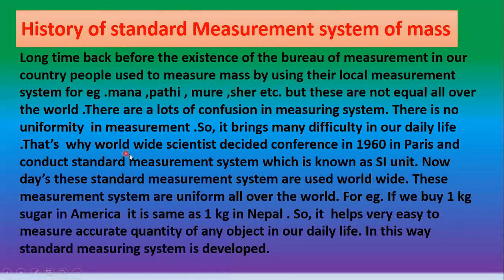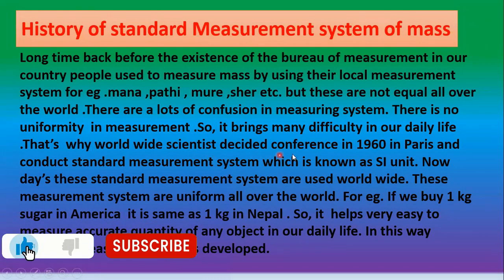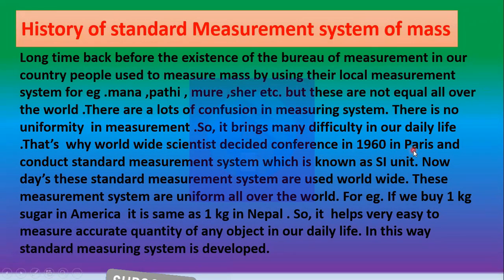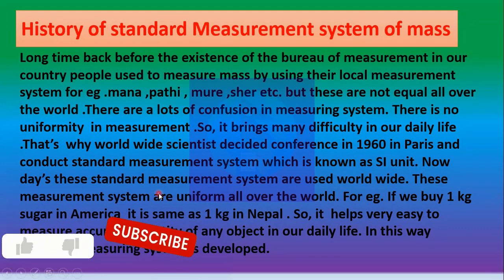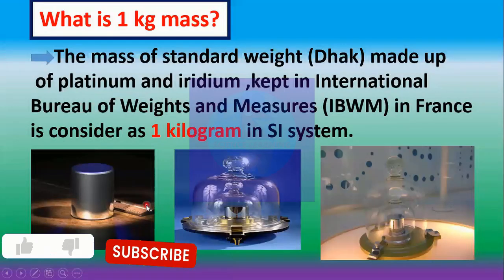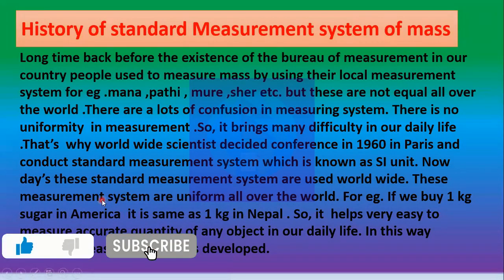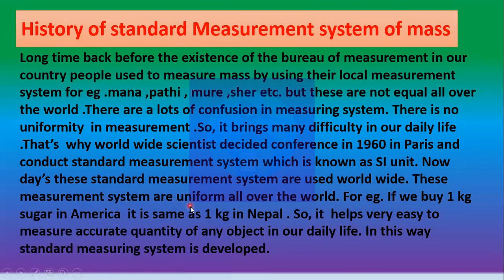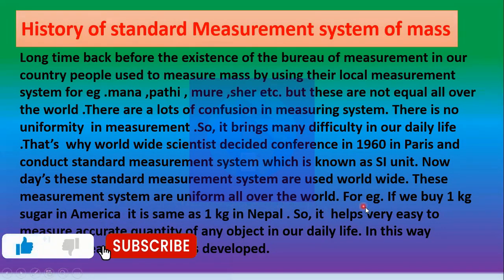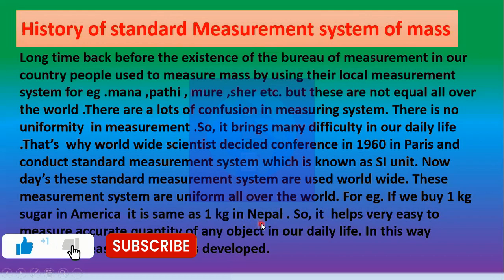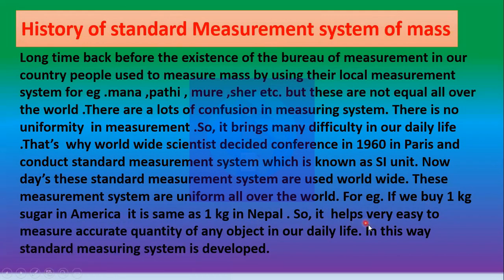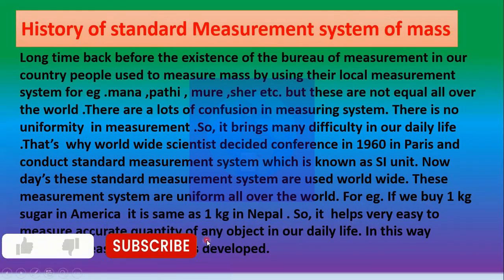That is why worldwide scientists decided to hold a conference in 1960 in Paris and established a standard measurement system, which is known as the SI unit. Nowadays this standard measurement system is used worldwide. These measurement systems are uniform all over the world. For example, if you buy one kg of sugar in America, it is the same as one kg in Nepal.